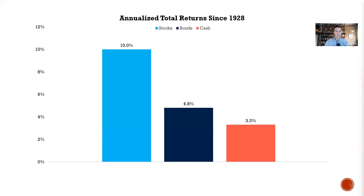If we look at the last 100 years, stocks have returned about 10% per year on average versus 5% for bonds and 3% for cash. And if you look at a chart like this, what you should be asking is: why is that the case? Why are stocks giving you this higher return? What's the trade-off?